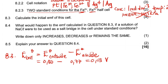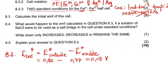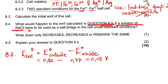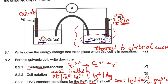Question 8.4 asks: what would happen to the EMF if a solution of sodium chloride were used in the salt bridge under standard conditions? Since we have silver in the electrolyte as Ag⁺, we need to consider what happens when chloride ions from sodium chloride enter the system.